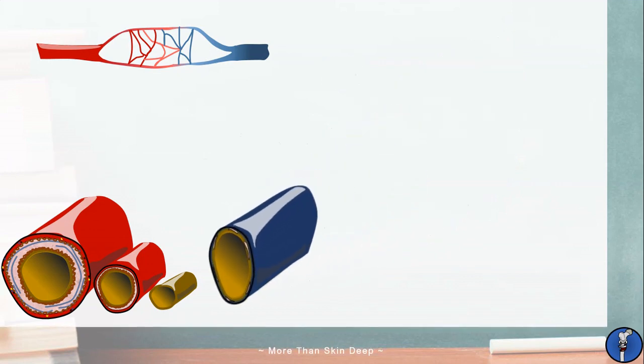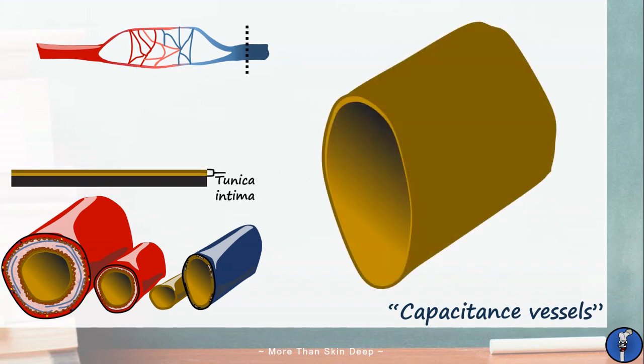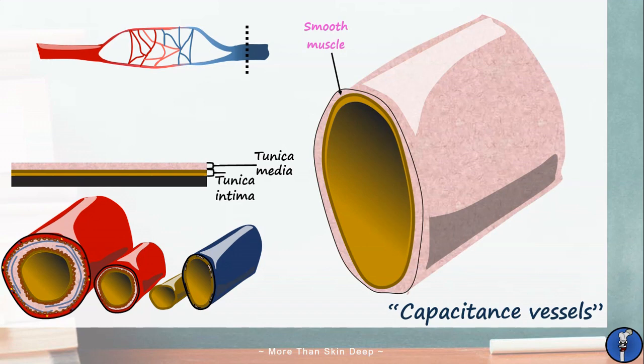Finally let's look at veins. These are our main capacitance vessels meaning they contain most of the blood that is in the circulatory system at any one time. They have a very wide lumen surrounded by the tunica intima and a thin layer of smooth muscle in the tunica media. Like venules they also have very little elastic tissue in the walls.